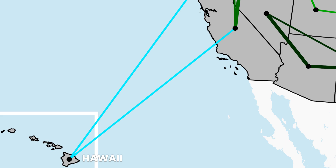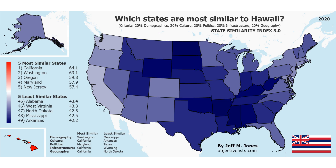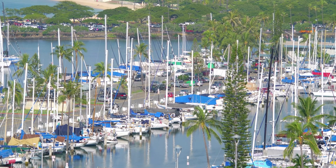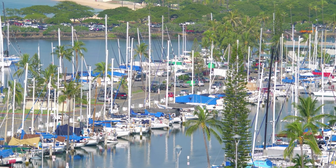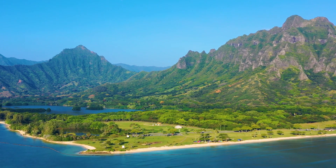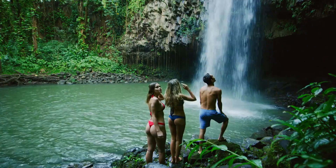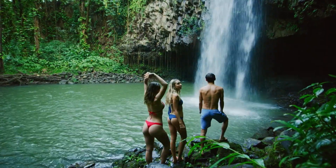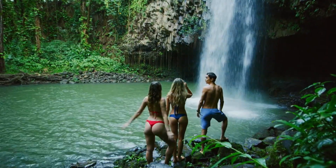Hawaii is another extremely unique state, but it is most similar to the Pacific Coast sub-region. California and Washington are the two states most similar to Hawaii. These states also border the Pacific Ocean and have some beautiful beaches as well as large shipping ports. In addition, Hawaii and states in the Pacific Coast region are quite mountainous and have volcanoes. Like Hawaii, their people are also quite liberal and their governments are dominated by Democrats.